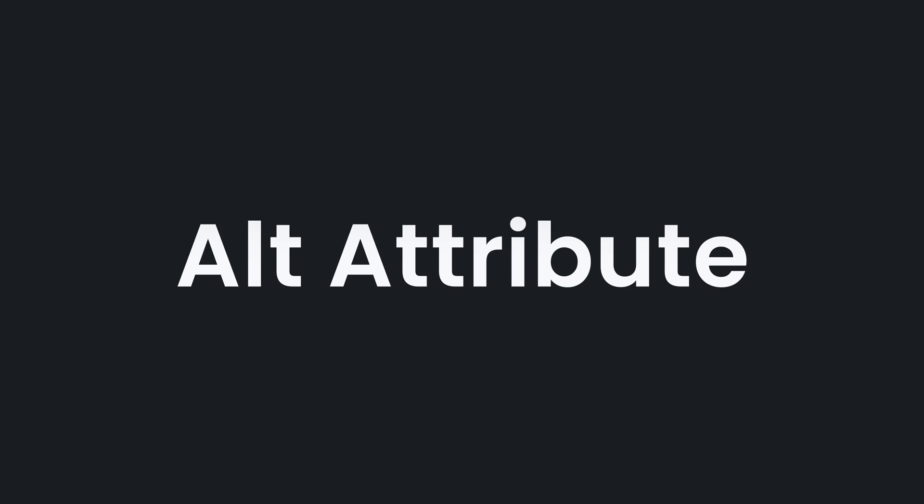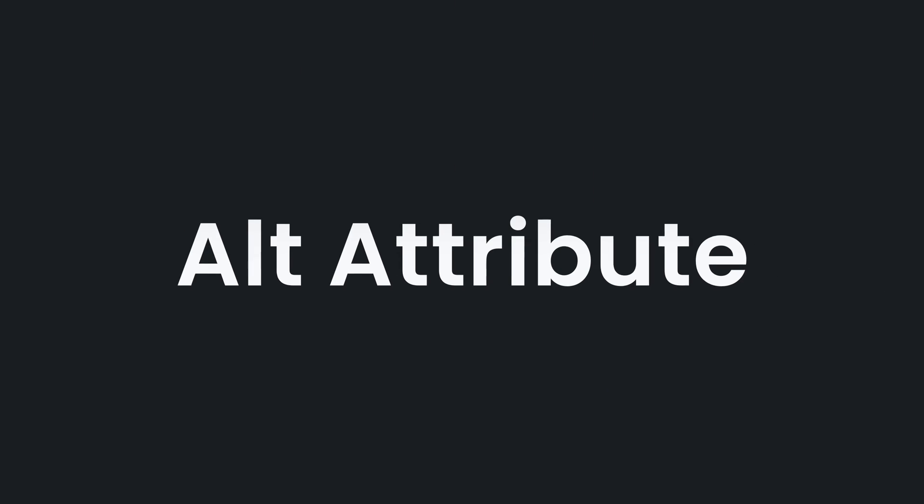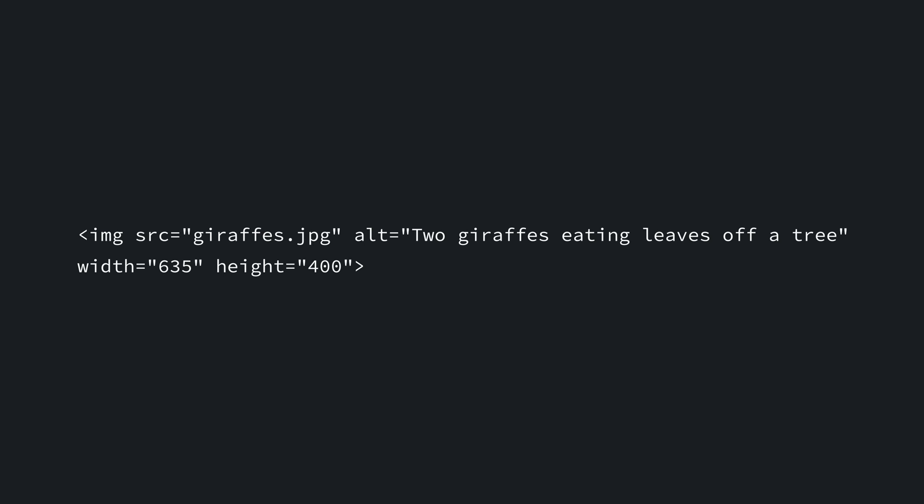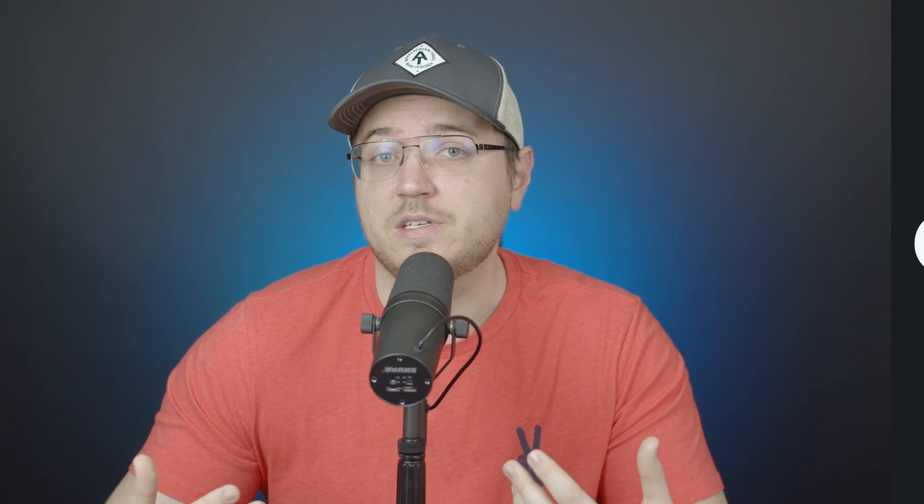The alt attribute is used to describe an image and is found inside an image tag. The alt attribute helps with your website's accessibility, but for SEO it helps index images for search engines. A good rule of thumb here is to keep it short but descriptive. Your goal is for someone to understand what the image is about without them needing to actually see it.